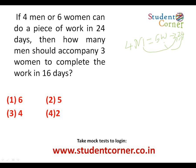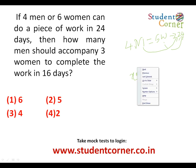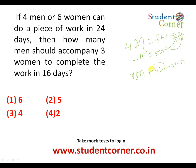The question is: how many men (let's say X men) should accompany three women to complete the work in 16 days? When four men equals six women, the indirect relation gives us two men equals three women. So instead of three women, we can place two men.